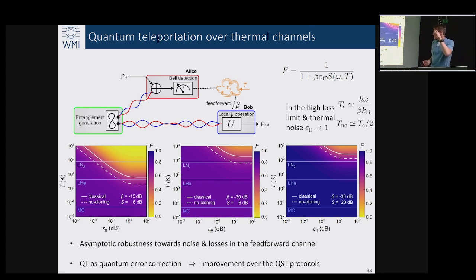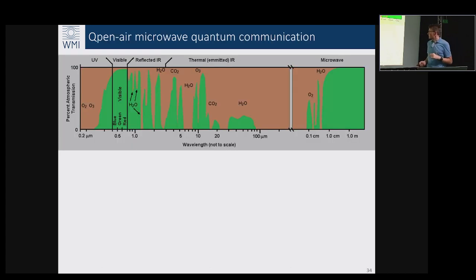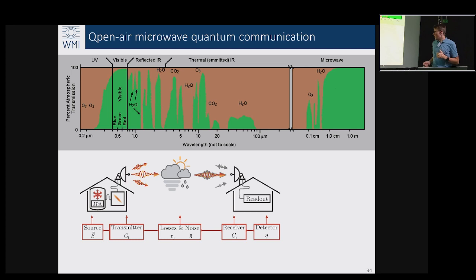While this was the game we played in the lab with our fridges, we were also dreaming a little bit what we can do in the open air by looking at this atmospheric absorption windows. We were thinking how feasible, for example, such a quantum communication scenario which is highlighted here when we don't have any millikelvin link but rather we create some squeezed states at the frequency of 5 GHz and we try to send them directly through the open air environment and read them out.